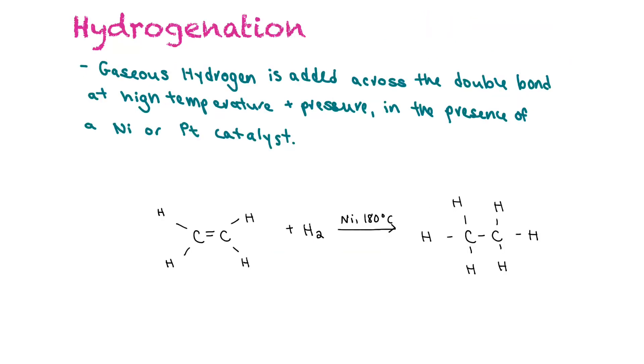So in hydrogenation, gaseous hydrogen is added across the double bond at high temperature and pressure in the presence of a nickel or platinum catalyst. So in our example here, we have ethene reacting with hydrogen gas with the presence of nickel and 180 degrees Celsius. And we end up with ethane. So we add hydrogen across the double bond. So we break that bond, free up two electrons that can then bind with the electrons in the two hydrogen atoms available.